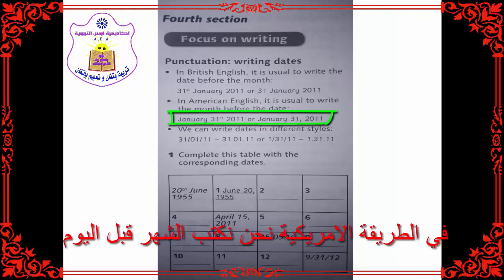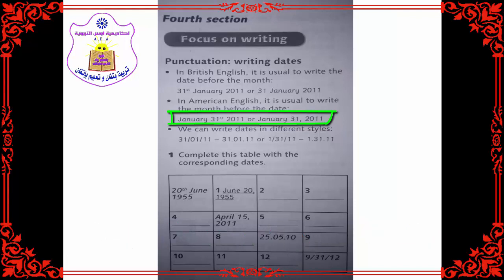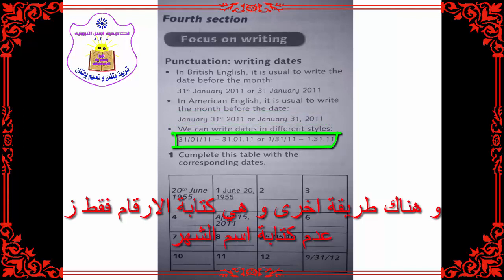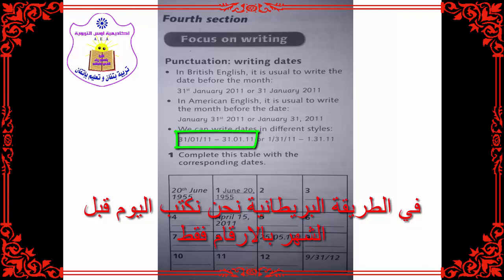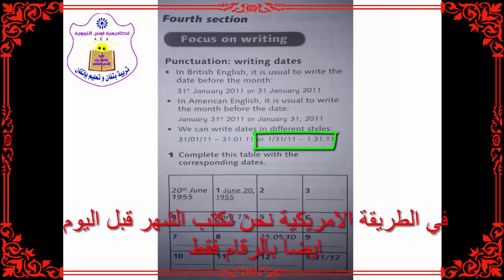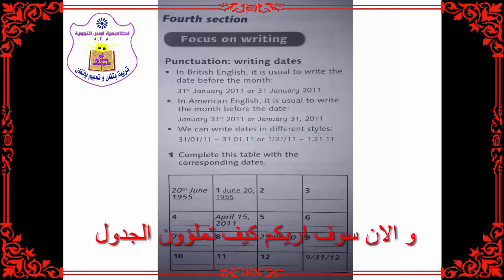In American English, we usually write the month first and then the date — for example, January 31st. There are also other ways using just numbers. In the British model, we write first the date, then the month. In the American model, first the month, then the date. Now let's fill the table. I will show you how to fill the table in the correct way, and then you will continue by yourselves.